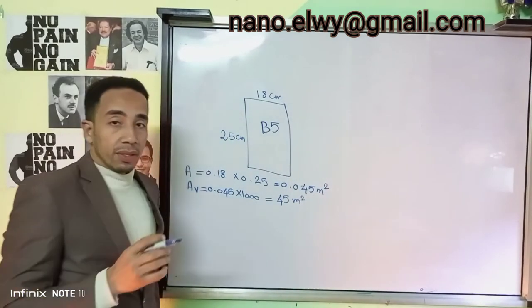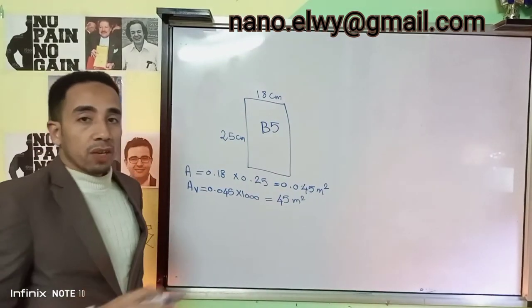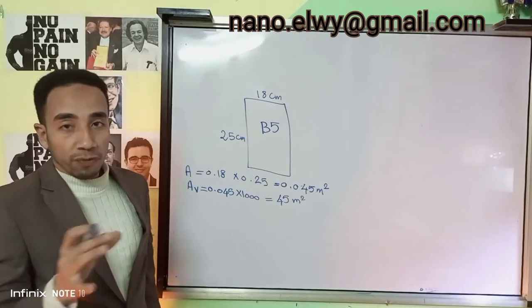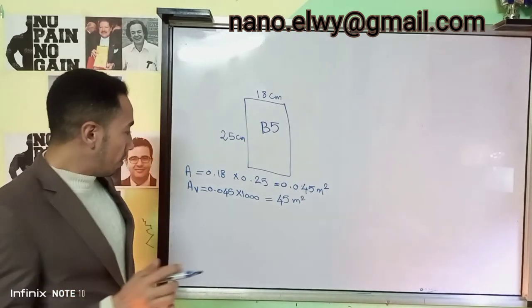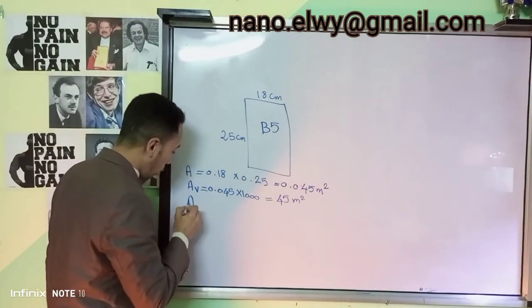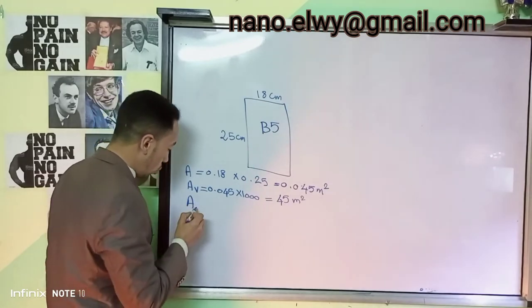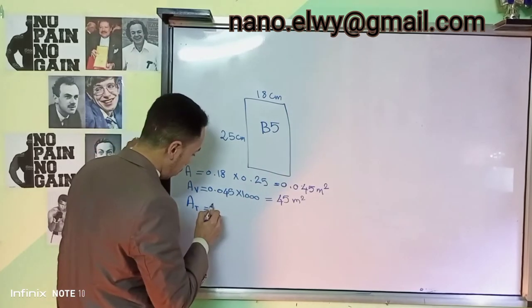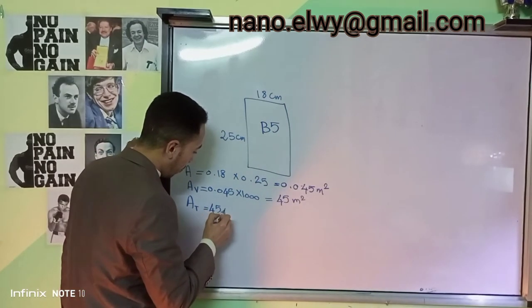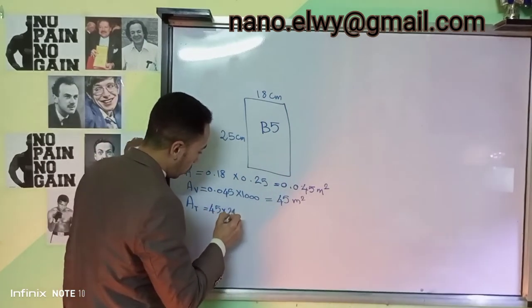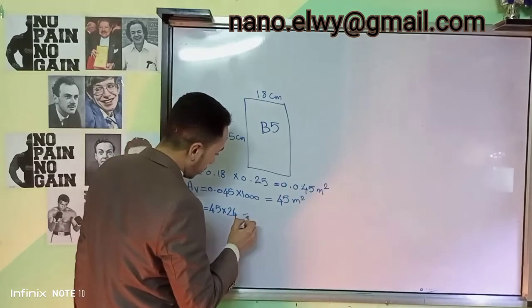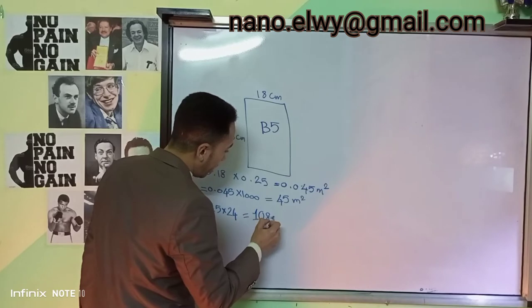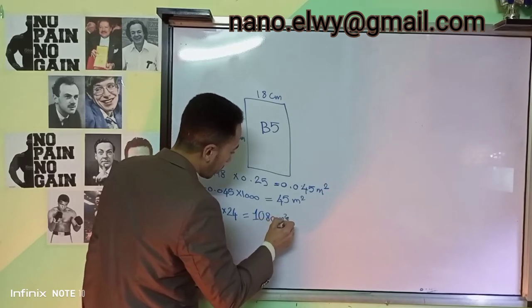Since the Encyclopedia Britannica contains 24 volumes, the total area of the entire encyclopedia will be 45 times 24, which equals 1,080 square meters.